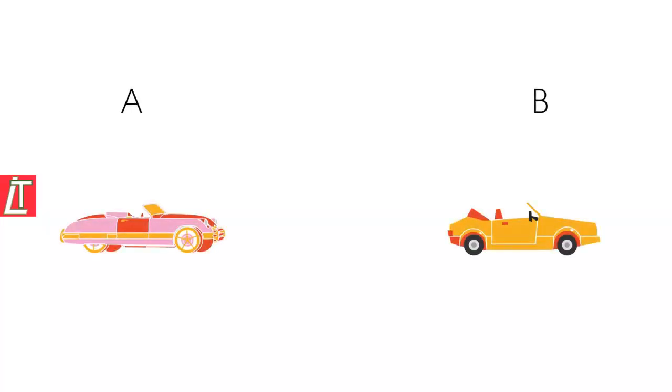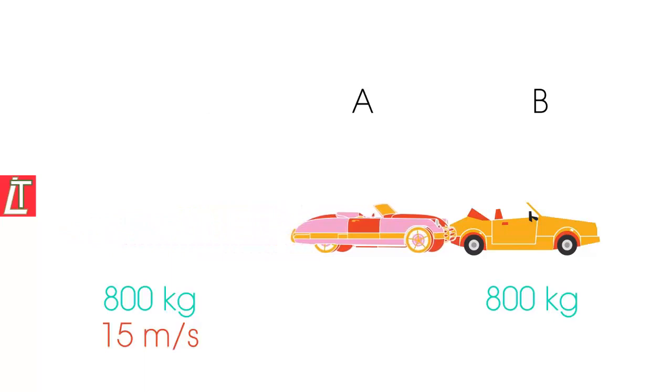Let's look at how to apply this. Two cars of equal mass, 800 kilograms, collide. Before the collision, car B is at rest, while car A is traveling at 15 meters per second. Calculate the momentum of car A.